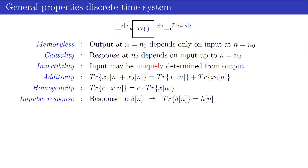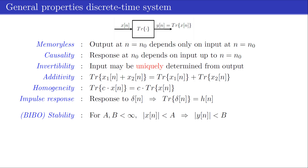The impulse response of a system, denoted hn, is defined as the response of a system when the input is a delta pulse, delta n. It is important for a system to have a response yn that is bounded in amplitude when the input is bounded. A system with this property is said to be stable in the bounded input bounded output sense, abbreviated as BIBO stability.